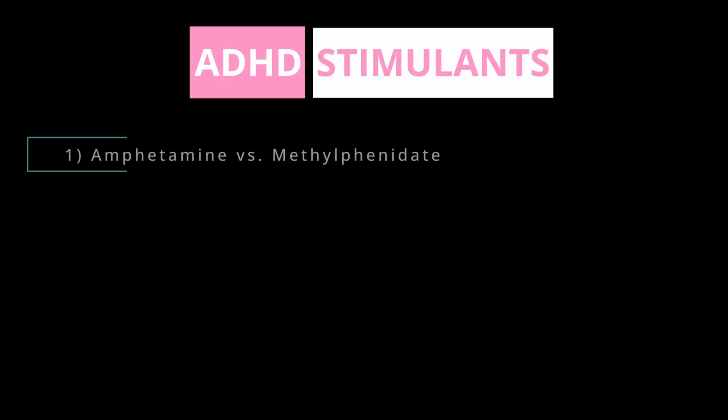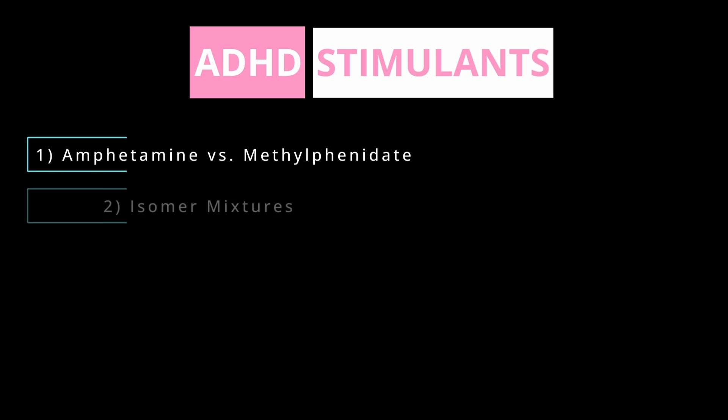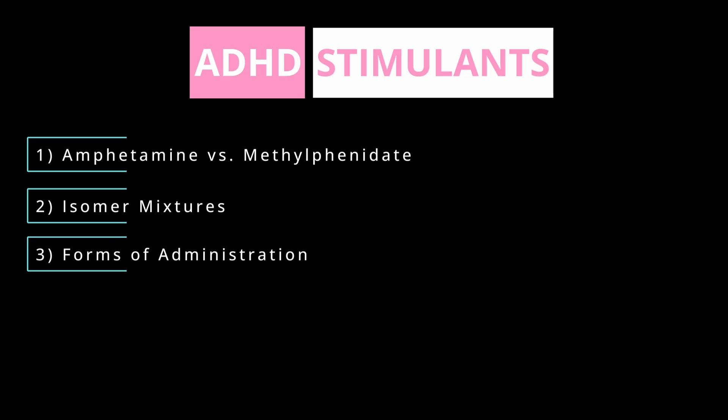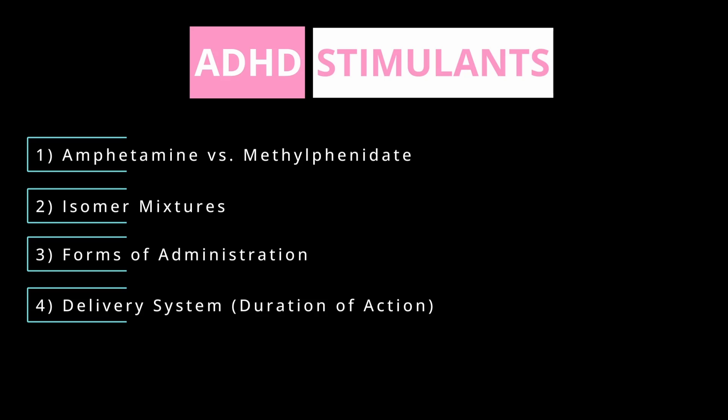To recap, stimulants differ by four major things: first, whether it's an amphetamine or methylphenidate; second, the isomer ratio — amphetamines come as 50%, 75%, or 100% dextroamphetamine, and methylphenidates come as dexmethylphenidate or a racemic mixture; third, the route of administration — pills, orally dissolving tablets, chewables, liquids, or patches; and fourth, the different delivery systems, which affect onset and duration of action and play a big role in symptom management.